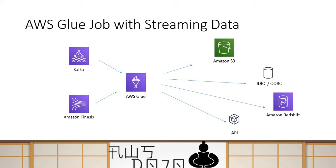The way the nature of the job changes is that earlier the Glue job was either scheduled, run on demand, or run based on an event. Now, when dealing with streaming data, the Glue job runs as a continuous job — when you start the job it keeps running — because streaming data keeps coming at the data sources like Kinesis or Kafka, and Glue will keep reading data from there and doing the ETL job to the destination.